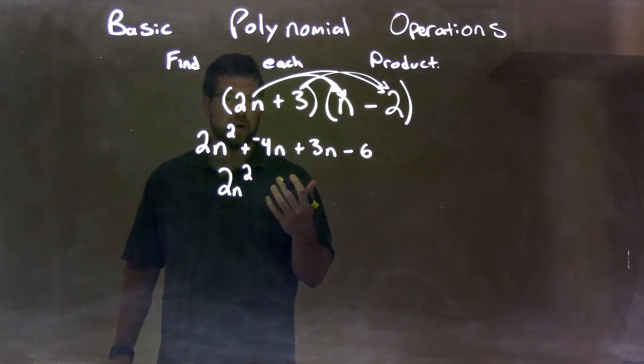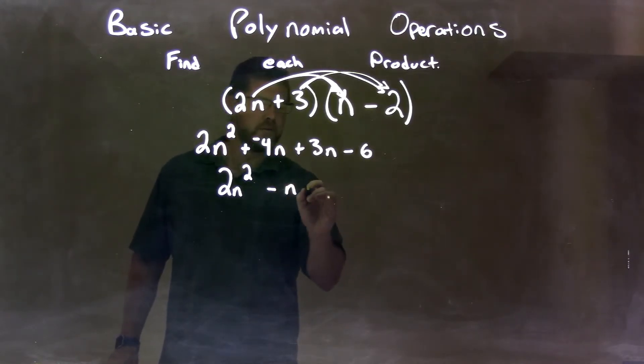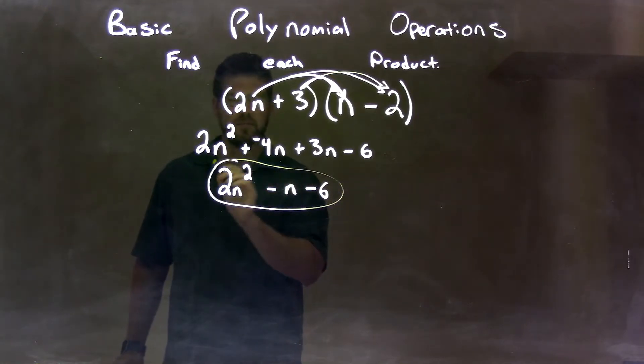We don't write the minus 1. When it's 1, we leave it there. So we just write the minus, just n. And then we have minus 6. And there we have our final answer.